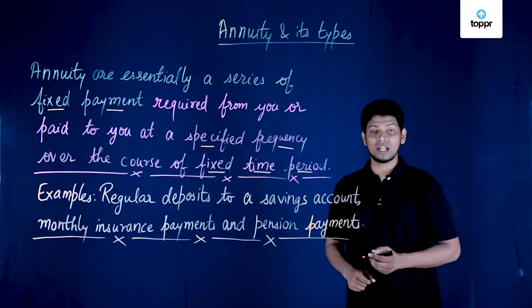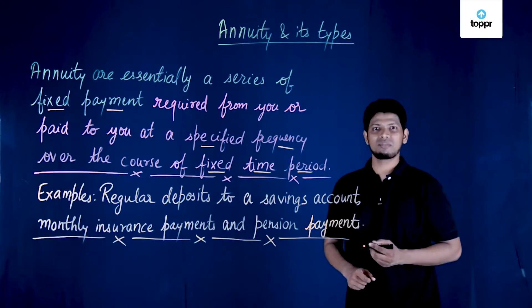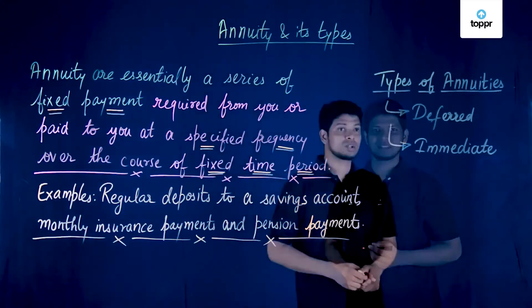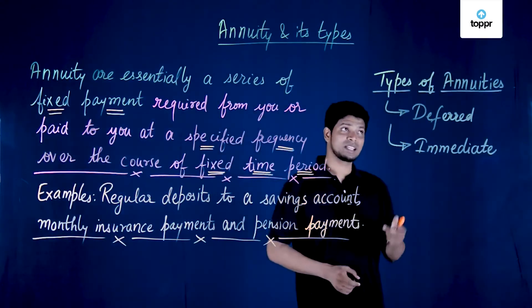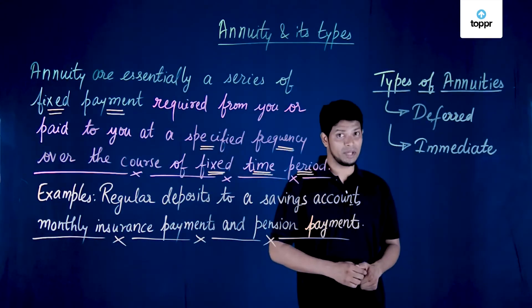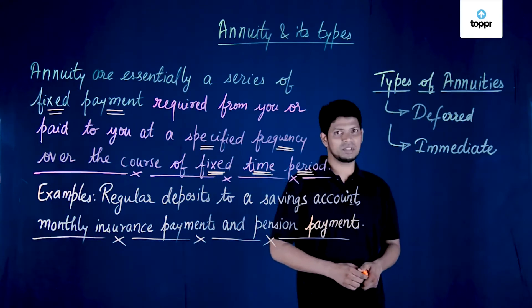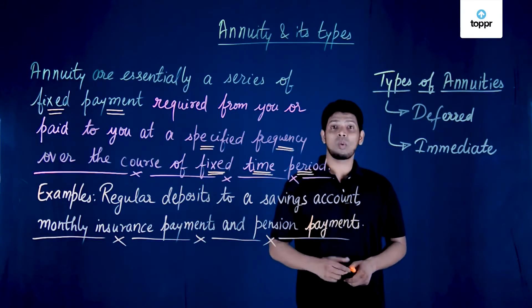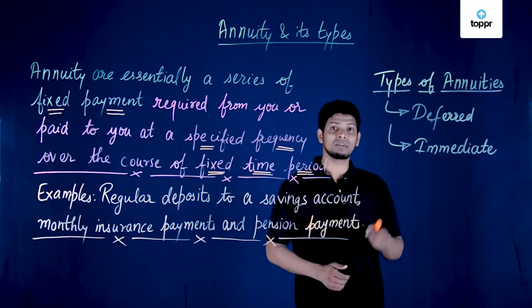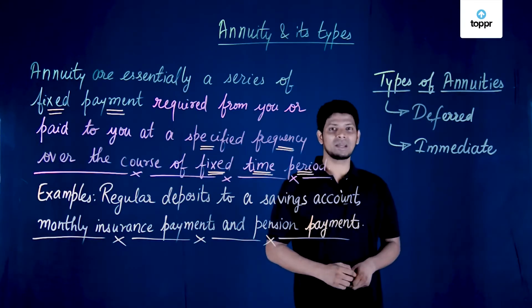Now we will understand the types of annuity. There are two types: deferred and immediate. So now we will see what deferred and immediate annuities are.